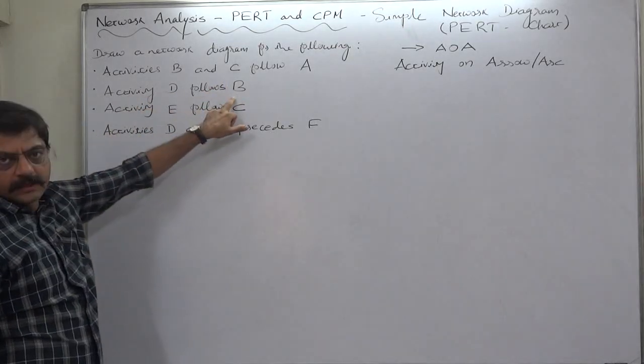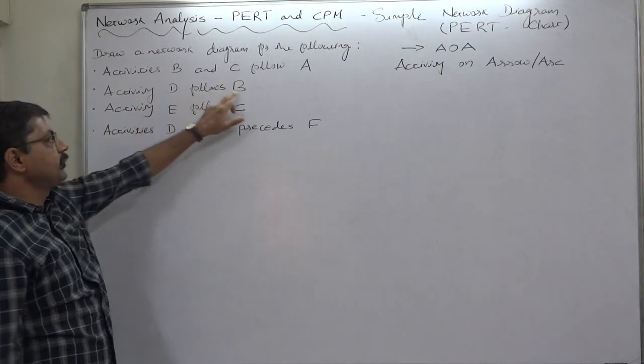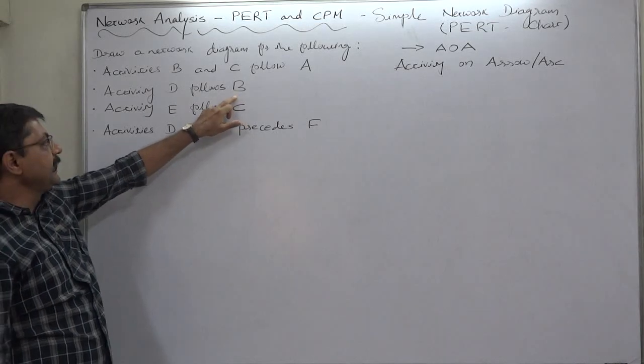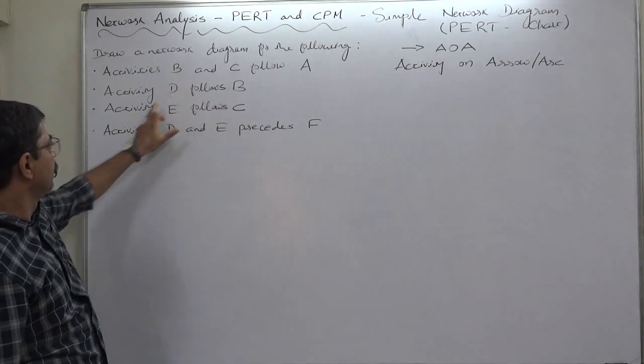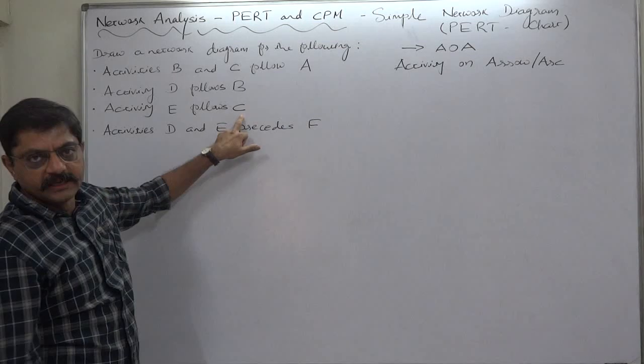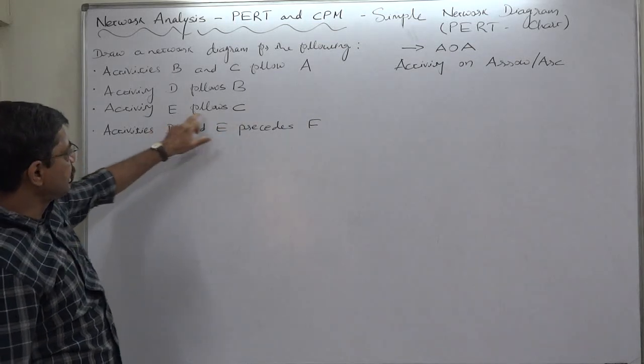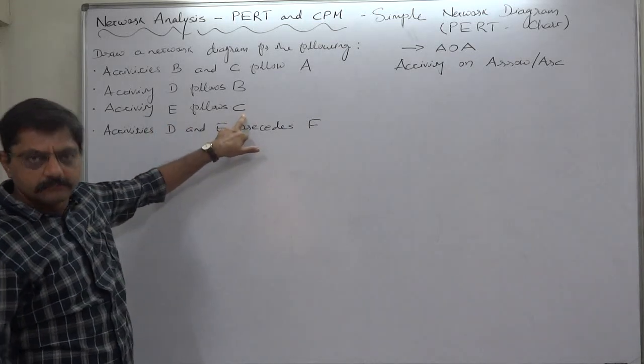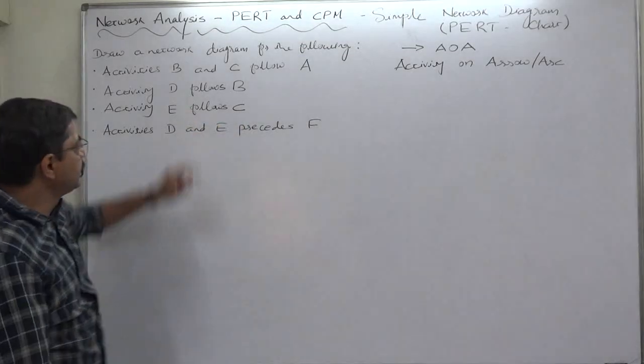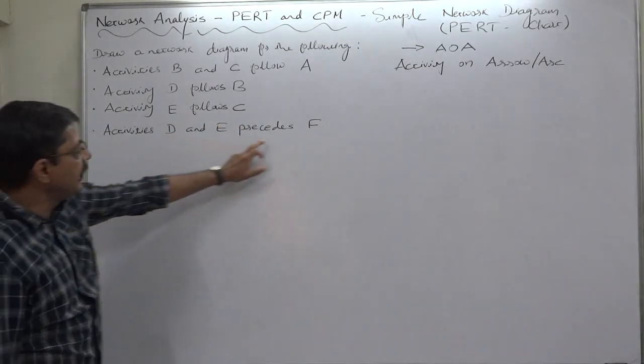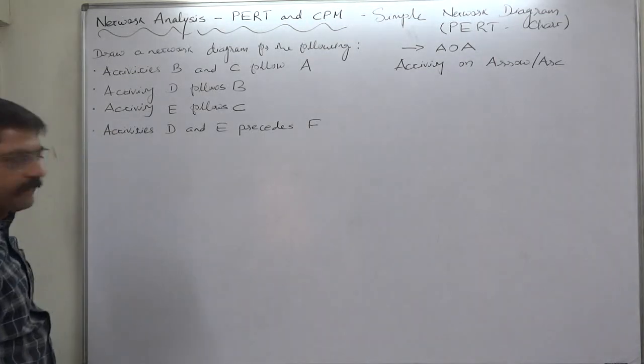Activities B and C are successor of activity A or activity A is the predecessor of B and C. Activity D follows B. That means D is successor of B. Similarly, B is predecessor of D. Activity E follows C. That means E is successor of C.